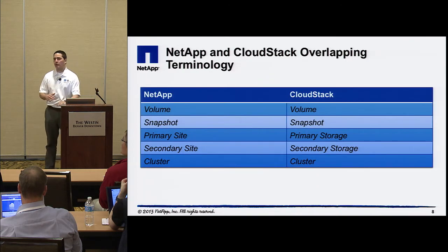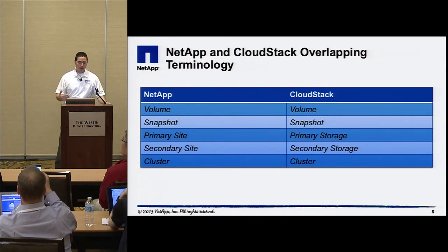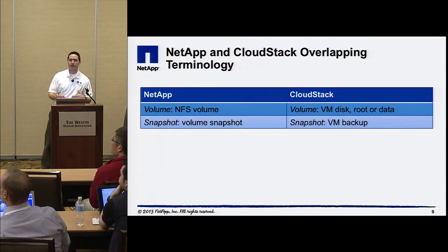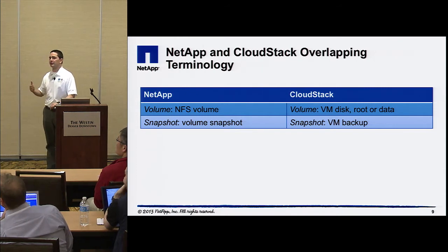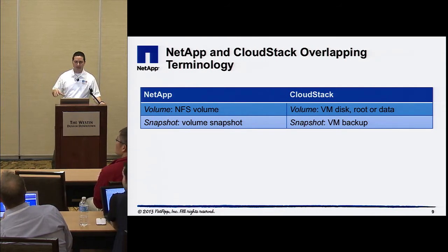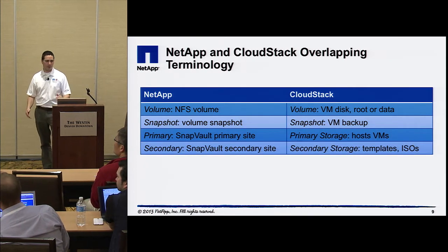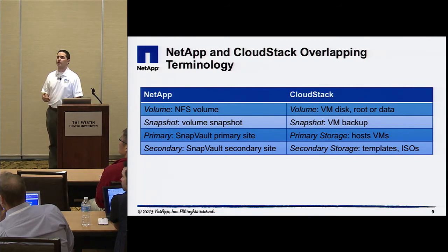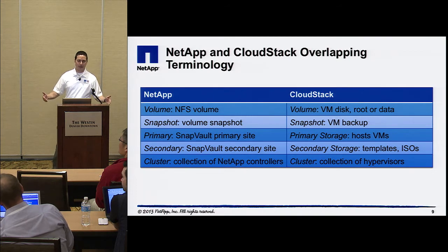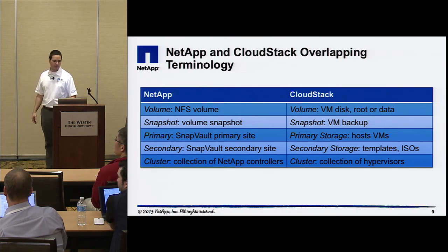A few terms to get out of the way, because it can be confusing if you're not well-versed with NetApp. Our volume is really an NFS volume, not to be confused with CloudStack where a volume is a VM disk or data disk. Snapshots for us are volume-level snapshots — very fast, point-in-time copies of your data. CloudStack uses the word snapshot to refer to a VM backup. And a cluster for us is a collection of physical boxes, while in CloudStack a cluster is a collection of same-type hypervisors.